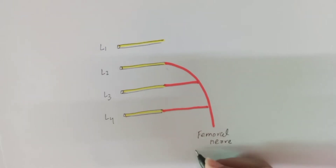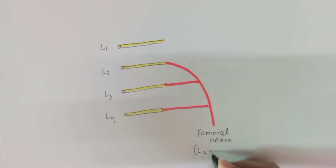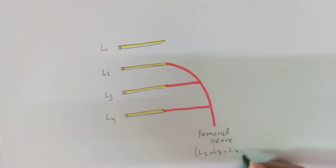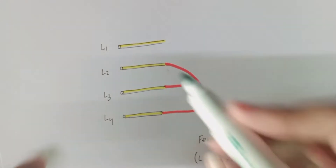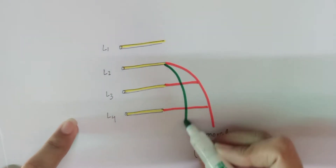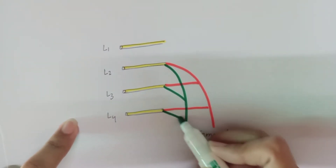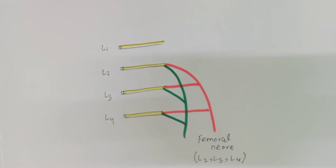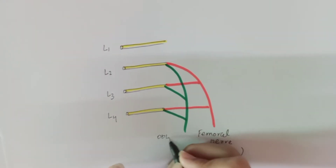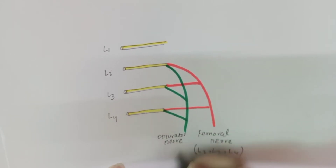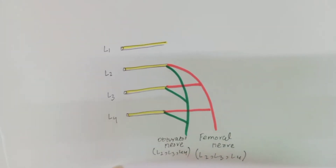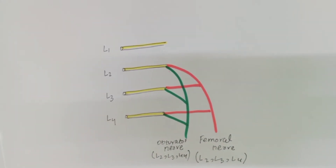The femoral nerve has root values at L2, L3, and L4. The ventral unions of L2, L3, and L4 give off the obturator nerve, with root values also at L2, L3, and L4.